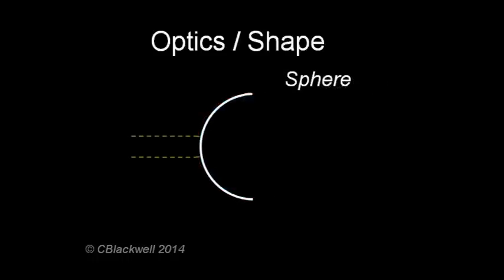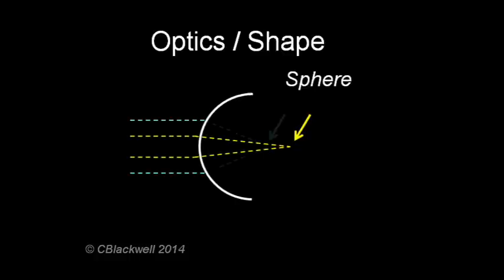In a spherical lens, light rays coming through the center of the lens are focused at one place, while those coming through the edge focus at a different place. The image quality is poor. This is called spherical aberration.